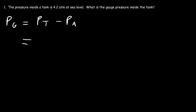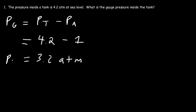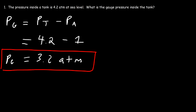We have the pressure inside the tank, or the total pressure, and that's 4.2 atm. At sea level, the atmospheric pressure is 1 atm. So the gauge pressure is 3.2 atm — that's the pressure above the atmospheric pressure. And that's the answer for this problem.